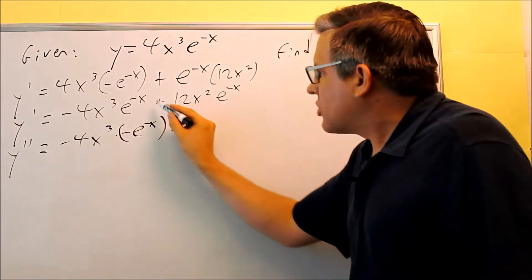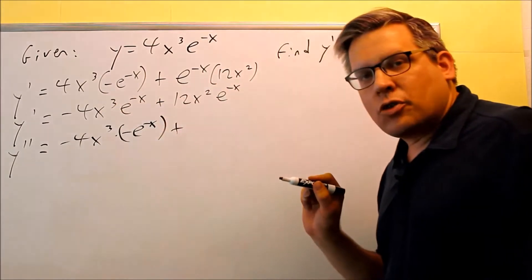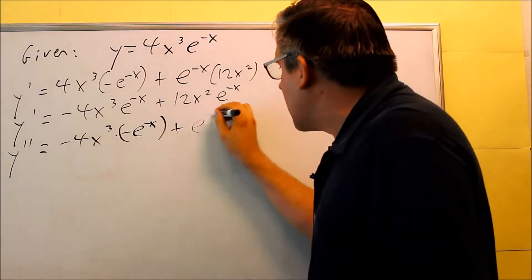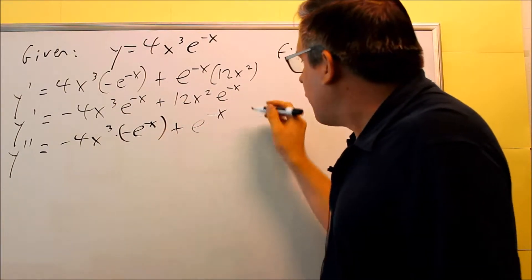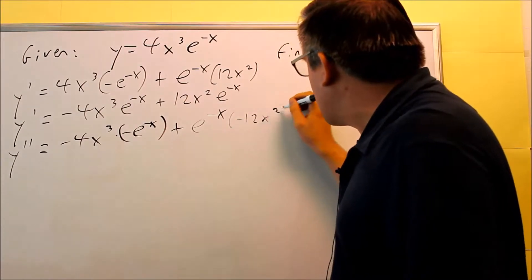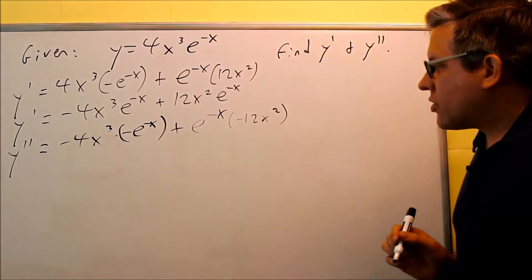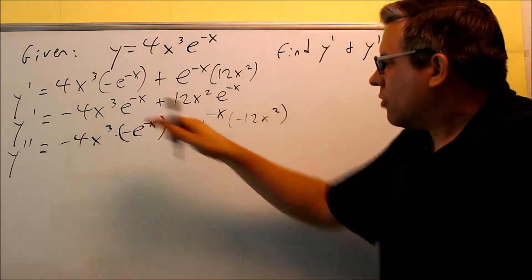And we have plus the second thing, we're still working with the first term here. The second term is going to be e^(-x), times the derivative of the first, which is going to be -12x². All right, so that takes care of the first term for derivative.